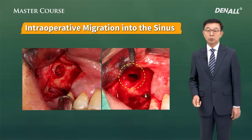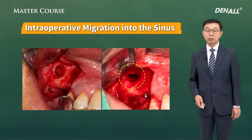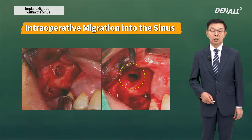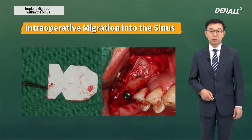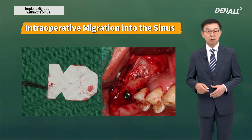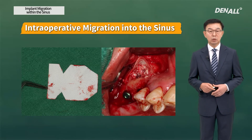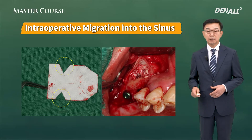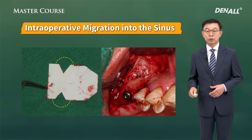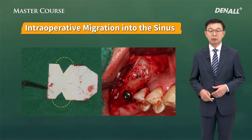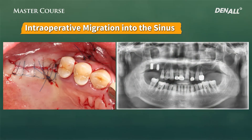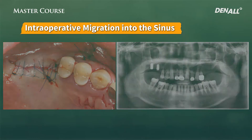I observed that the membrane became perforated. In the same way as repairing the sinus membrane, I applied the resorbable membrane, did side cutting, positioned it, did bone graft, and placed the implant. And then suture. This is after surgery.